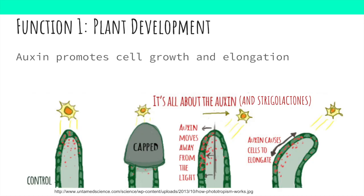To explain the mechanism of strigolactones, let's focus on each function individually, beginning with the control of plant development. Plants grow and develop at the ends of the root or the shoot. Plants can control growth by regulating which cells are active, as well as responding to environmental conditions such as temperature and water availability. Strigolactones contribute to plant growth by working with a more commonly known plant growth hormone, auxin.